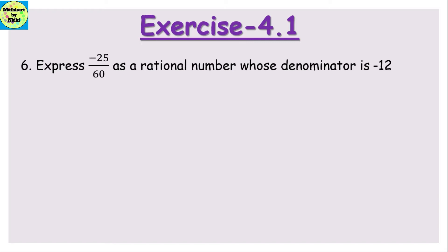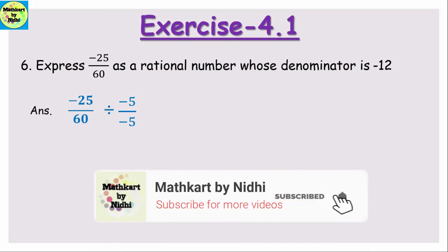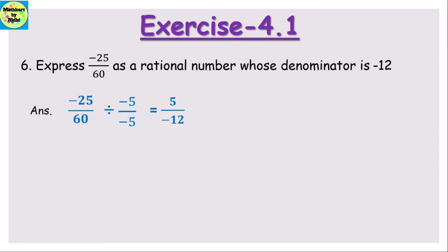Question number 6: express -25/60 as a rational number with denominator -12. Here 60 is bigger than 12, so we cannot multiply — we need to divide. We divide both numerator and denominator by -5. So -25 ÷ (-5) = 5 and 60 ÷ (-5) = -12, giving the answer 5/(-12).